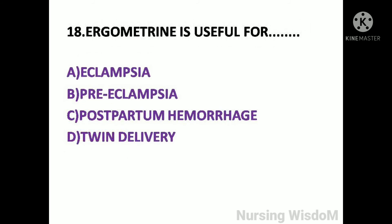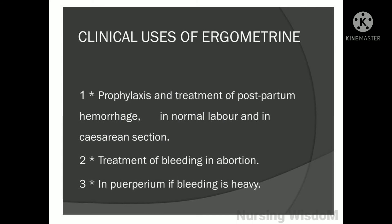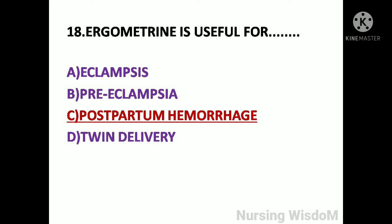Next question: Ergometrine is useful for — option A: eclampsia; option B: pre-eclampsia; option C: postpartum hemorrhage; option D: twin delivery. Clinical uses of ergometrine include prophylaxis and treatment of postpartum hemorrhage in normal labor and in caesarean section, treatment of bleeding in abortion, and in the puerperium if bleeding is heavy. So here the answer is option C, postpartum hemorrhage.